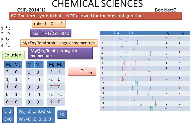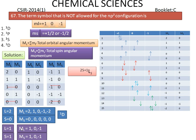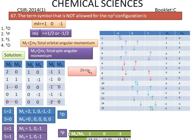The next largest ML value is 1, with a corresponding MS value of 1. Its L and S values are both 1. The possible ML and MS combinations are shown. For L = 1 and S = 1, the corresponding term symbol is 3P, which has 9 microstates.